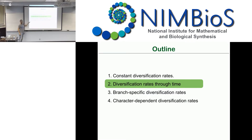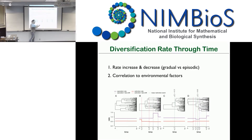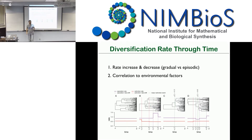Now let's look at estimating diversification rates through time. The model uses rate increases or decreases that are either gradual or episodic — so we have periods of constant speciation and extinction rate, with abrupt shifts at the boundaries of episodes. These shifts can affect the speciation rate, the extinction rate, or represent a mass extinction event. The underlying model says speciation and extinction rates are constant through each episode and just change at the end.